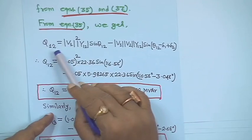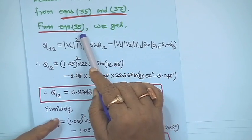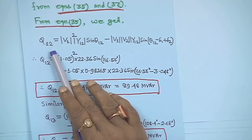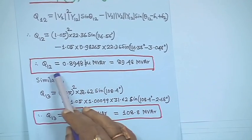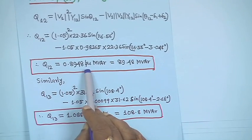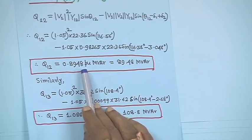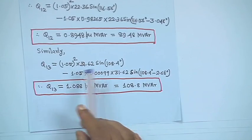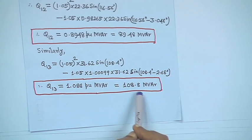The Q_ik expression is given in equation 35. Put i equal to 1 and k equal to 2, substituting all parameters, and you will get Q₁₂ equal to 0.8948 per unit, that is 89.48 megawatt (base is 100 MVA). Similarly, computing Q₁₃ with all values gives Q₁₃ equal to 108.8 megawatt.